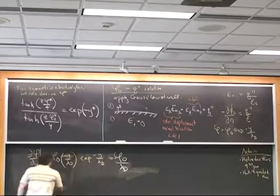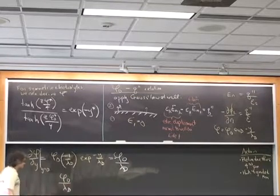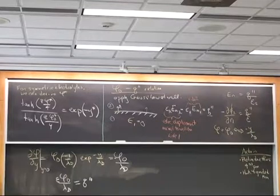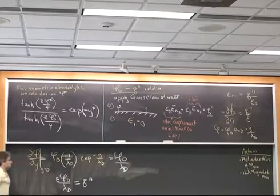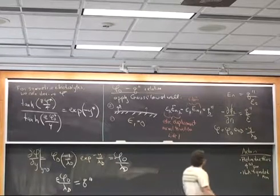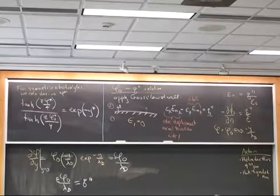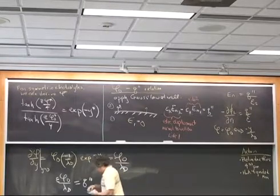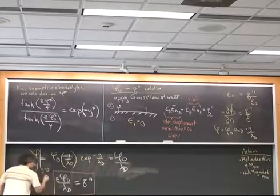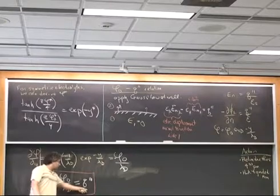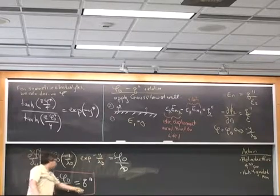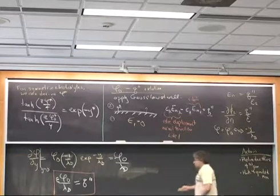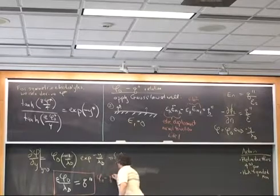And if I then plug that into that expression I get that phi naught over lambda d is equal to q double prime over epsilon. And for fun I'll put the epsilon over there. Do I have another minus sign error? Now I've confused myself. No, no, I'm sorry this is right. So I have no minus sign and that's consistent with the fact that if I have a negative surface charge I have a negative potential at the wall. If I have a positive surface charge I have a positive potential.